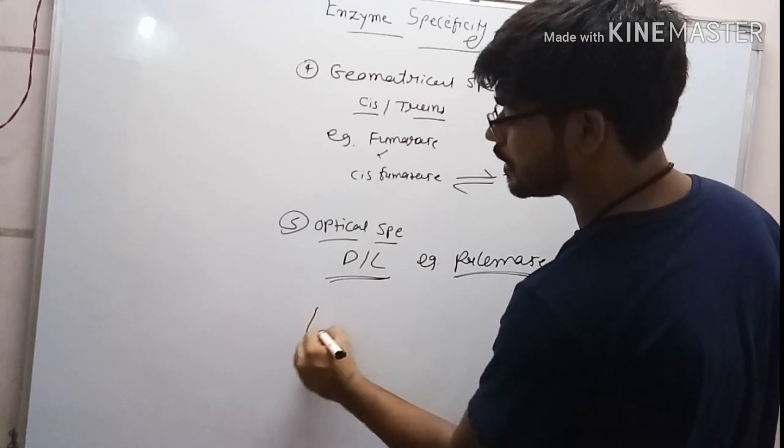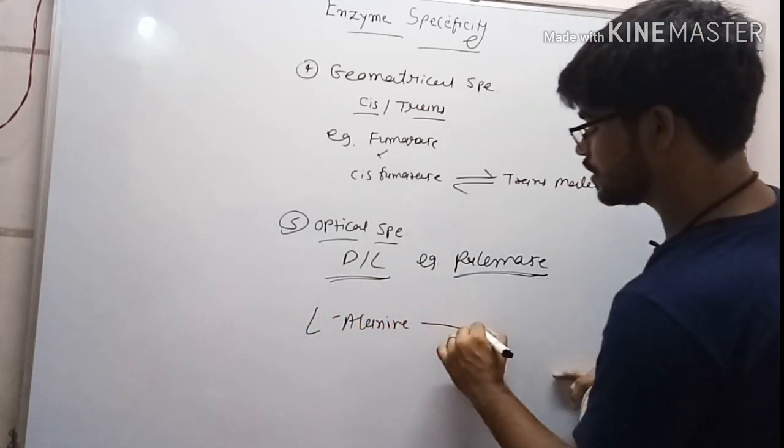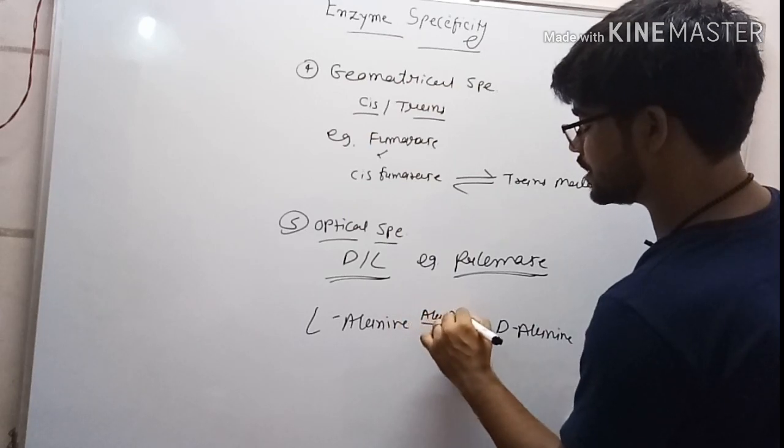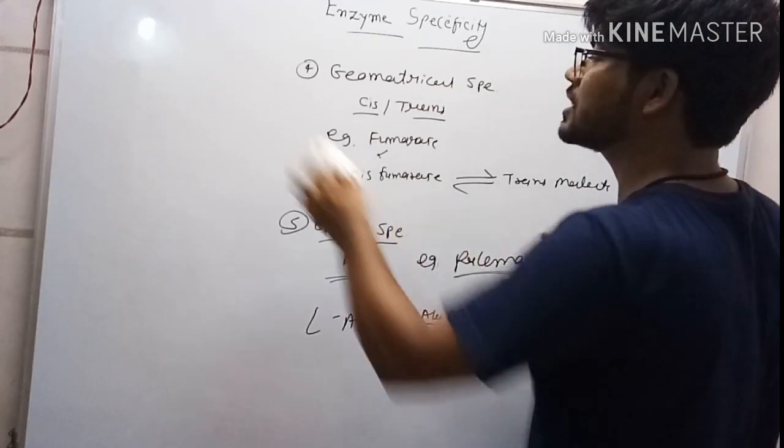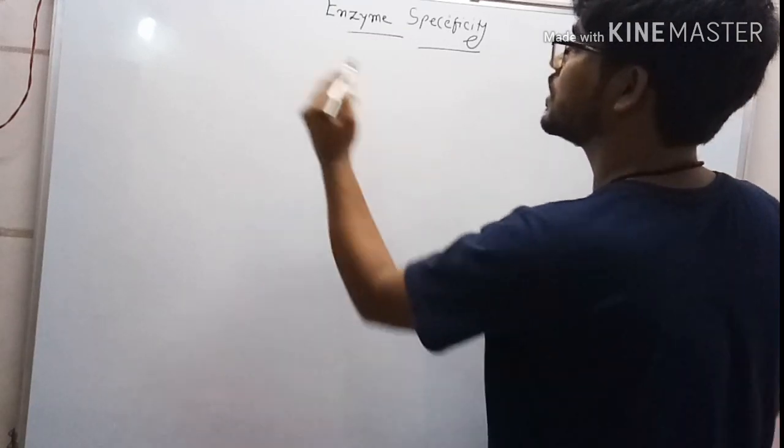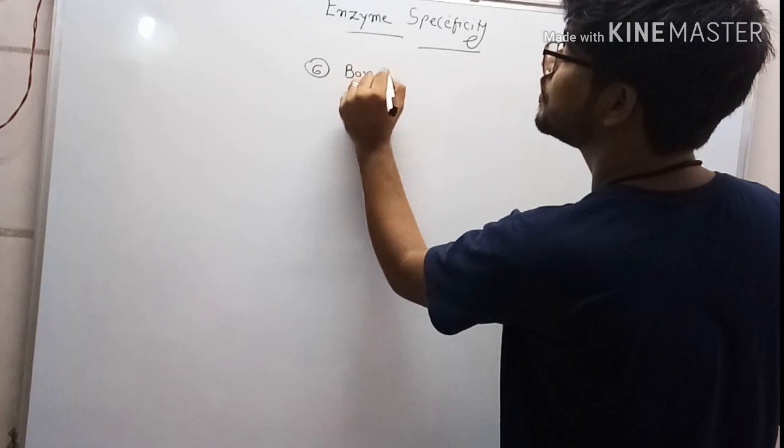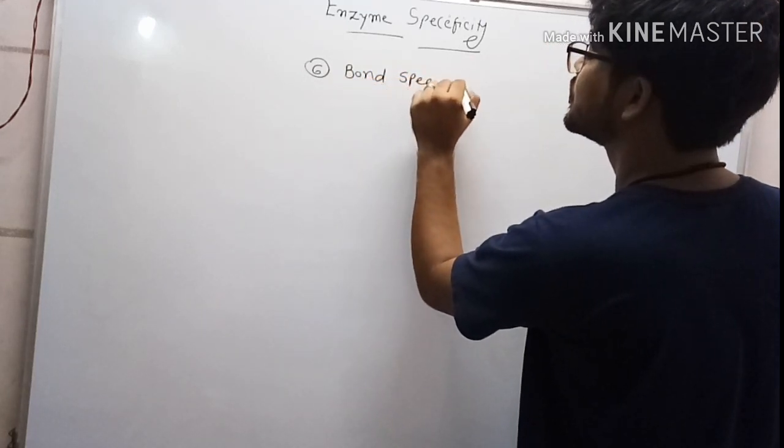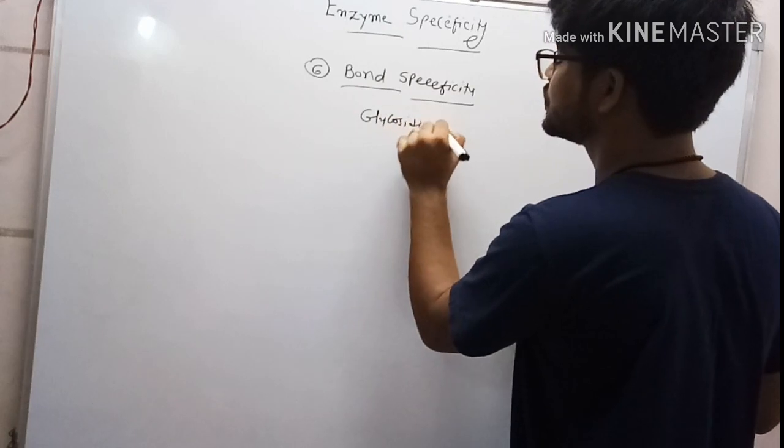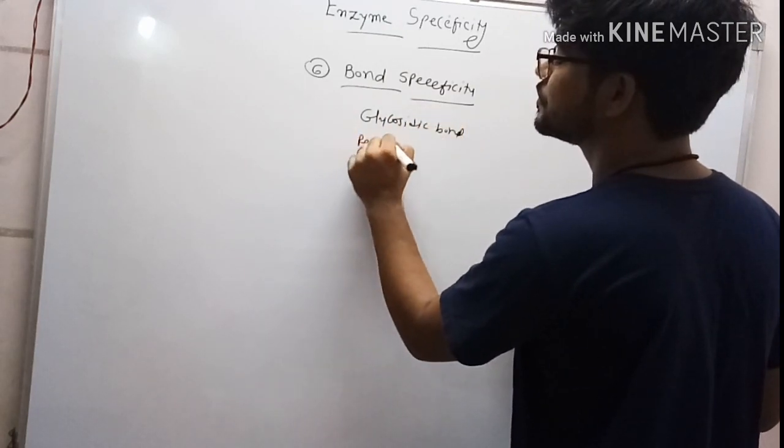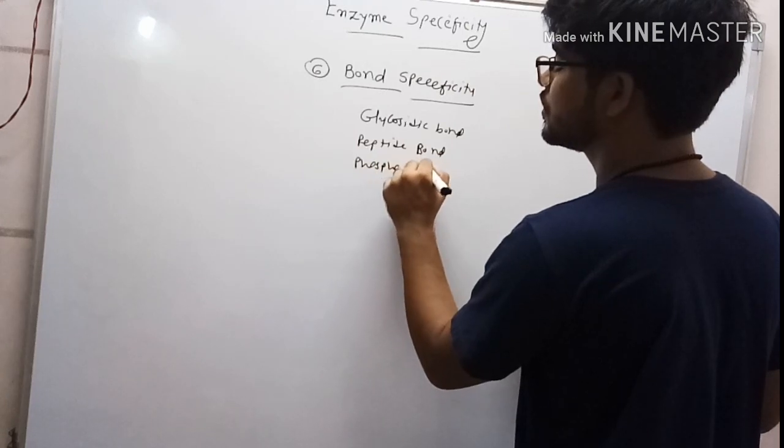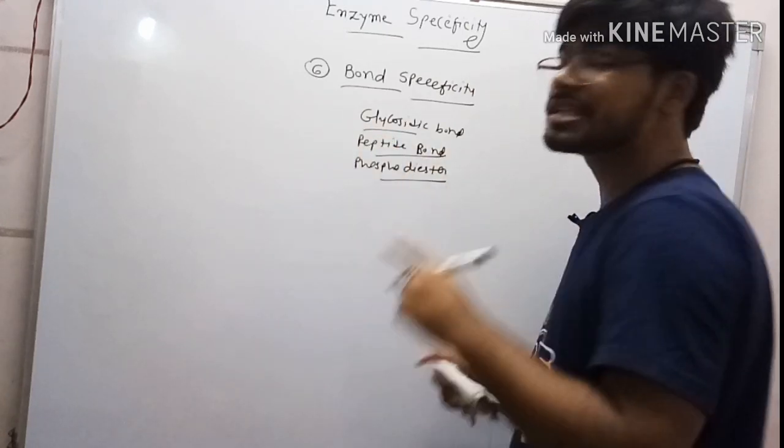Racemase works on L-alanine to convert it into D-alanine. The enzyme is alanine racemase. The last one is bond specificity. Based on the bond, enzymes are specifically divided into this category.